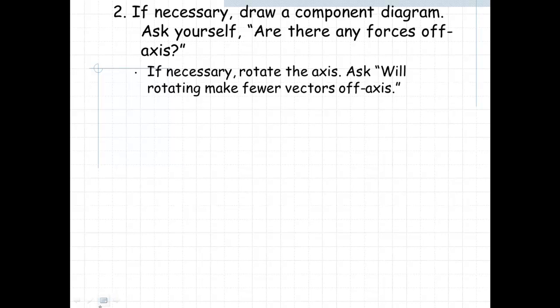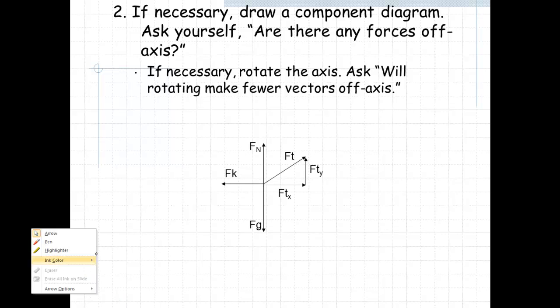The next step is to ask yourself, are there any forces off-axis? And the answer here is yes. There is one force that is off-axis, and it's the force of tension. So we have to draw in its horizontal and vertical components. What we want to do is draw a right triangle with that force that's off-axis as the hypotenuse, and the other two forces as the legs of a right triangle. And the inside angle should be the angle that's given to us.